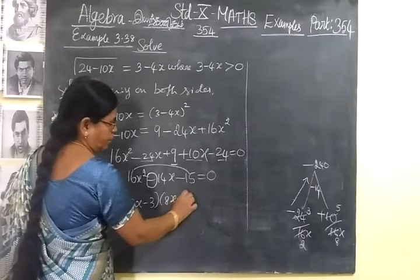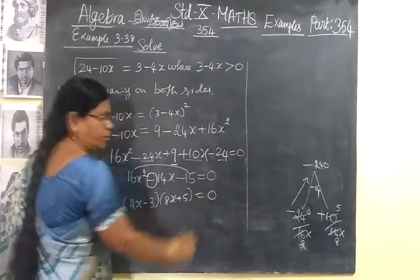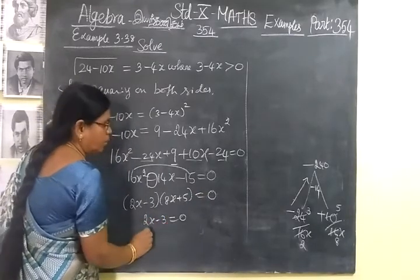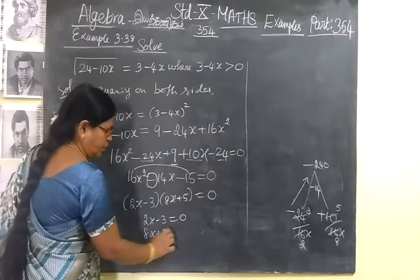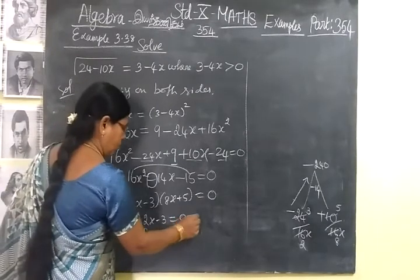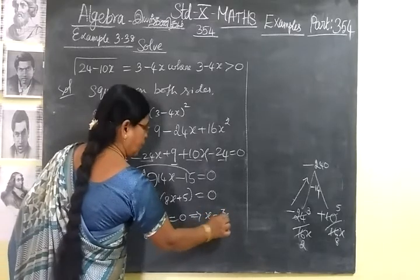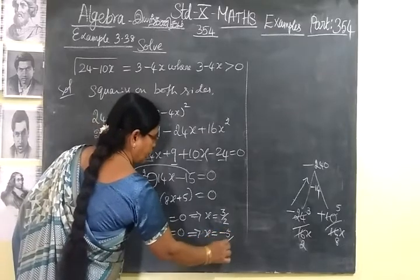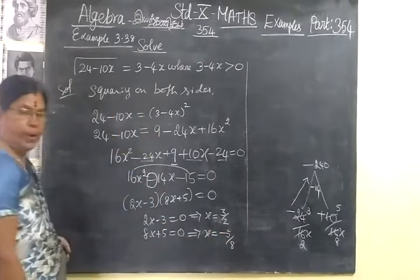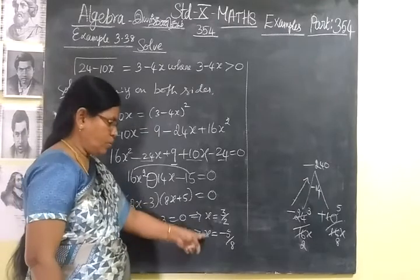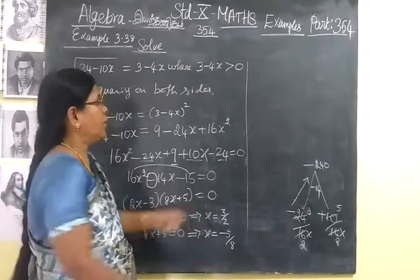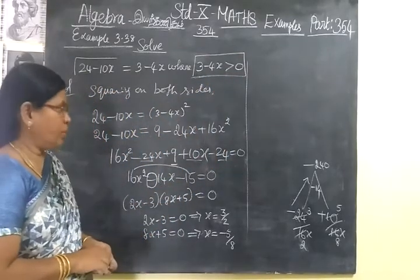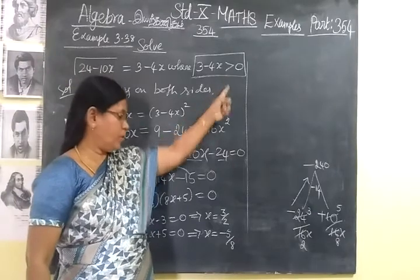Now you write plus 5 or minus 5, so -5/8. But we need to check the solution. You know here the condition given is 3-4x greater than 0, it must be positive.